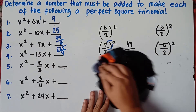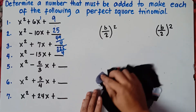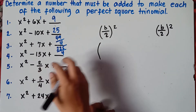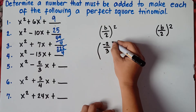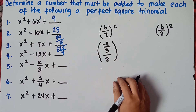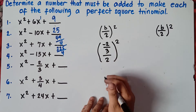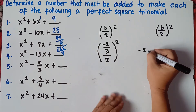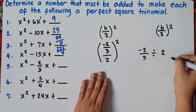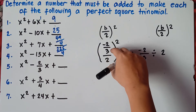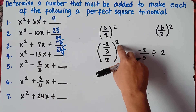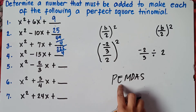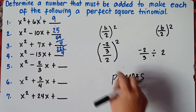Let's try number 5. What if the value of b is a fraction? b is negative 2 over 3. Substitute: negative 2 over 3, divided by 2, then squared. Simplify inside the parenthesis first — always follow PEMDAS: parenthesis first, then exponent.